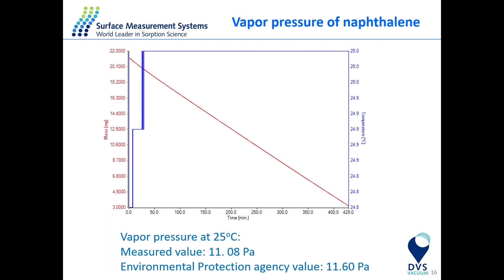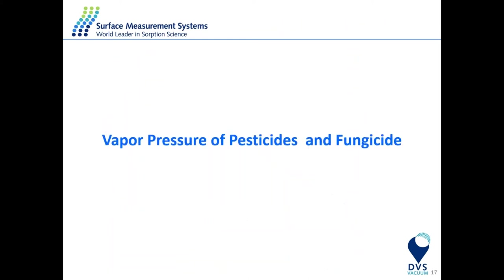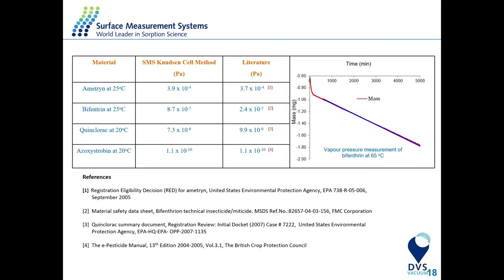Moving to some examples — the vapor pressure of naphthalene, which you might be familiar with as a component used in mothballs to keep clothes fresh. The vapor pressure at 25 degrees is about 0.8 Pascal, which aligns with what the environmental protection agency reports. Another example is vapor pressure of pesticides to tackle environmental issues. We look at four different pesticides — ametrine, bifethrin, finquorac, and sixthobin — and again the method and literature values are in very good agreement. You can go down to 8.7 × 10⁻¹⁰ Pascal with this method.